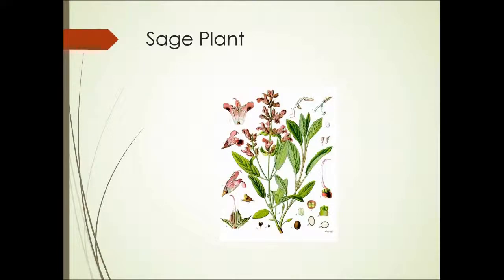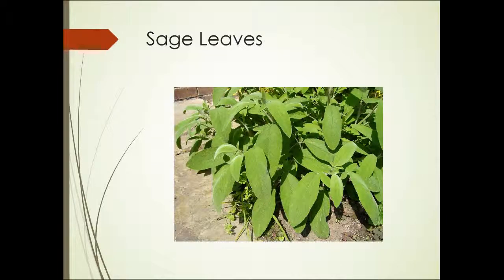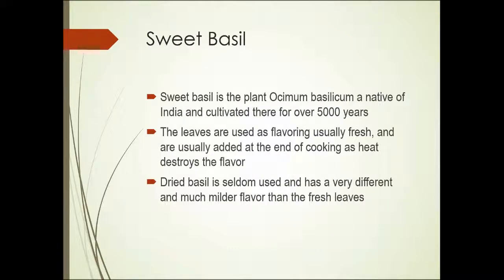Here is a picture of a sage plant. The part used is the leaf. The leaves are often used dried and crushed; they are sometimes used fresh and whole or dried and whole, depending on the particular recipe.